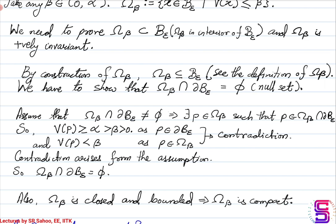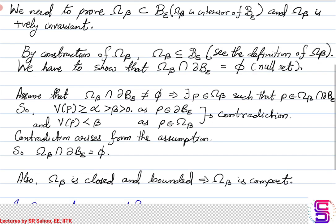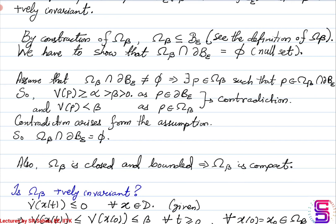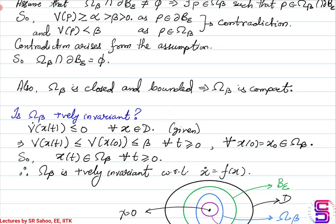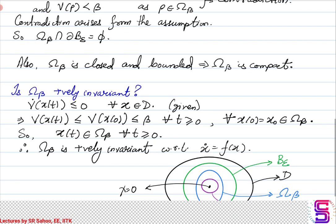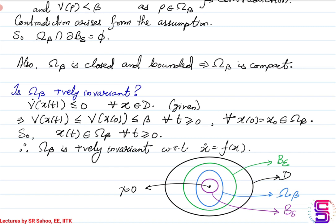So omega_beta lies entirely inside B_epsilon. Also notice that omega_beta is a closed set and it is a bounded set, which essentially means omega_beta is a compact set. The next question is: is omega_beta a positively invariant set? For this, we will use the property that V-dot(x) is negative semi-definite when x(t) belongs to D. So we have V-dot(x(t)) to be less than or equal to 0 for x(t) belonging to D.